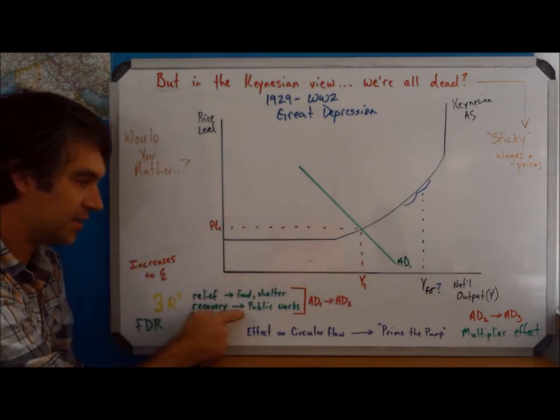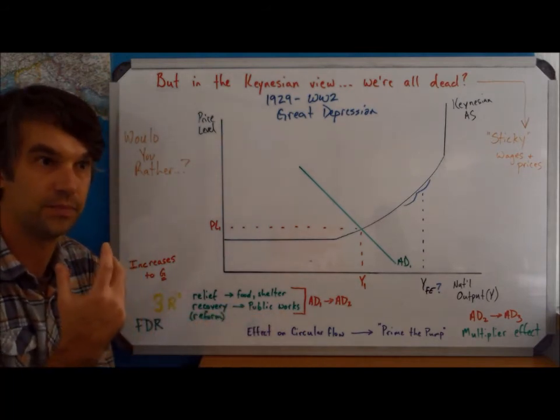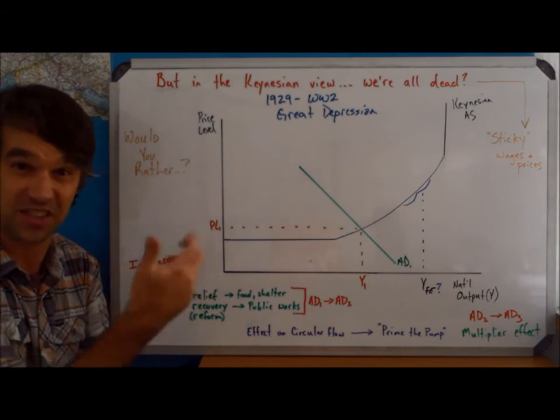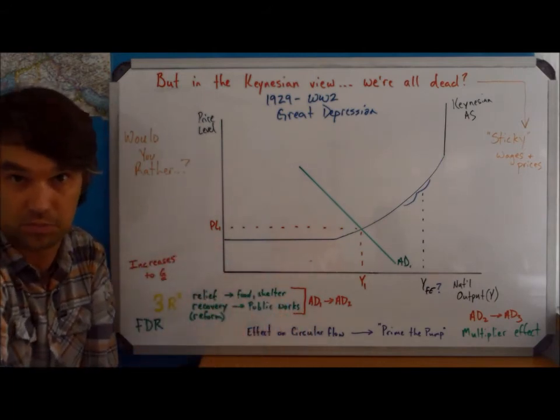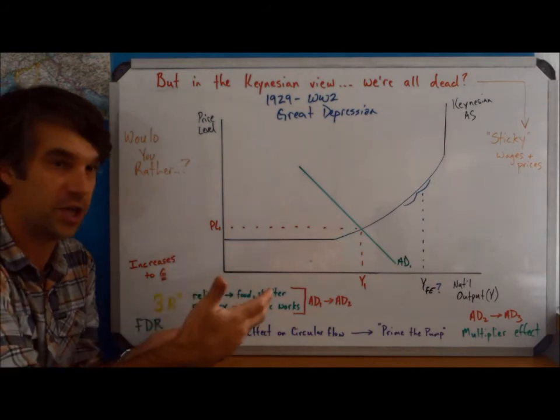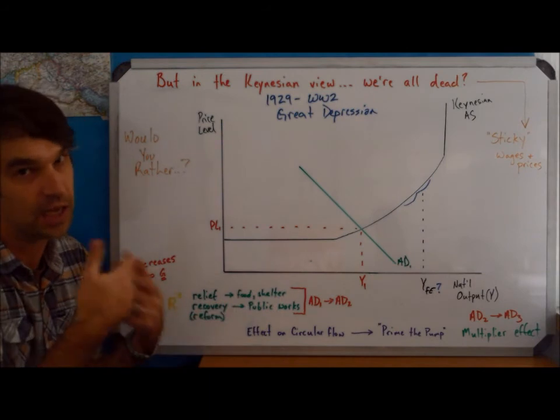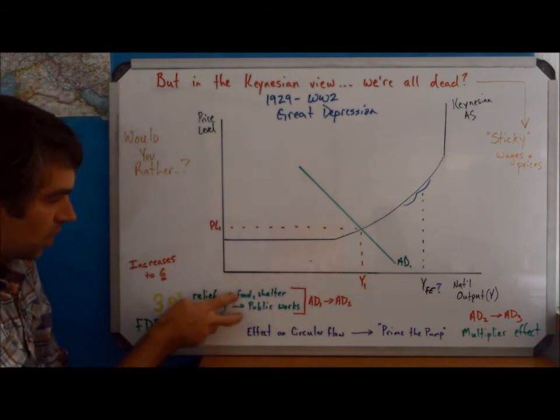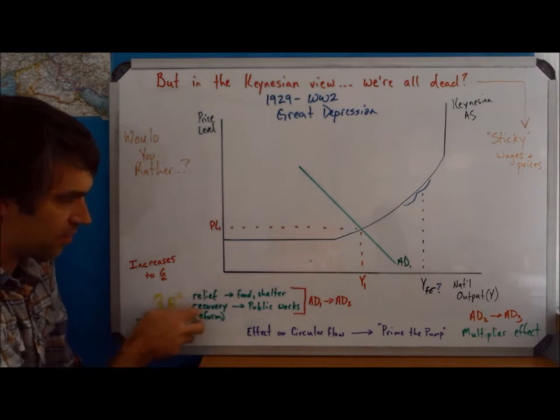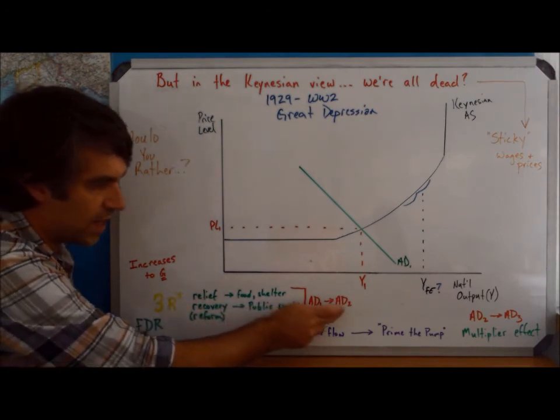Recovery, this is what we call public work, so this is when the government steps in and actually starts to hire people simply for the sake of having them have a job. If they have a job, they're going to have money in their hands and they're going to go out and spend the money, so C is going to increase. So, this first bit, relief and recovery, those are going to result in what we see is a change from AD1 to AD2.